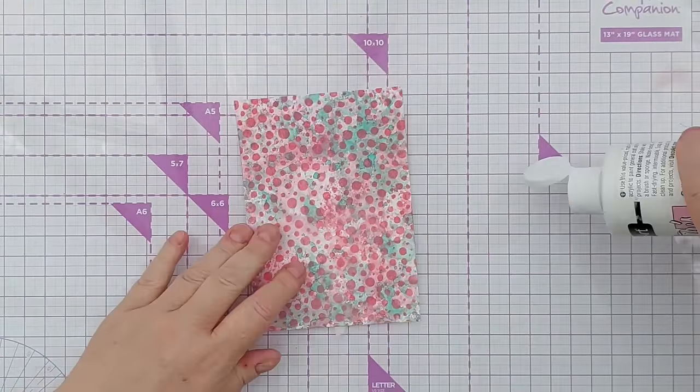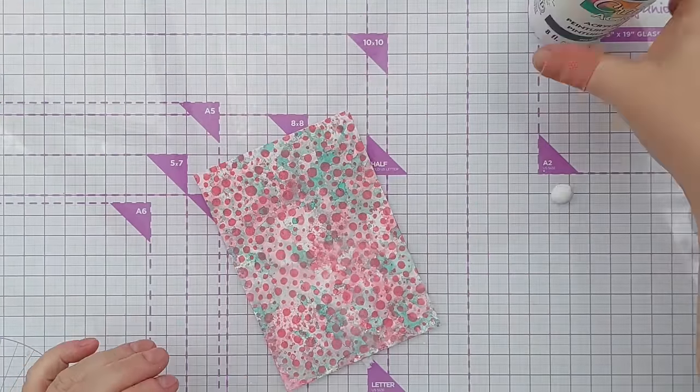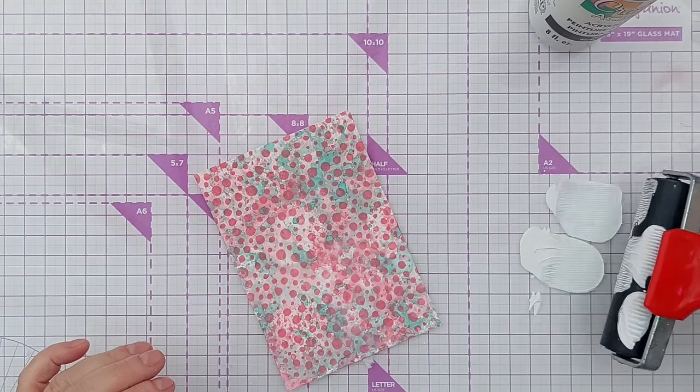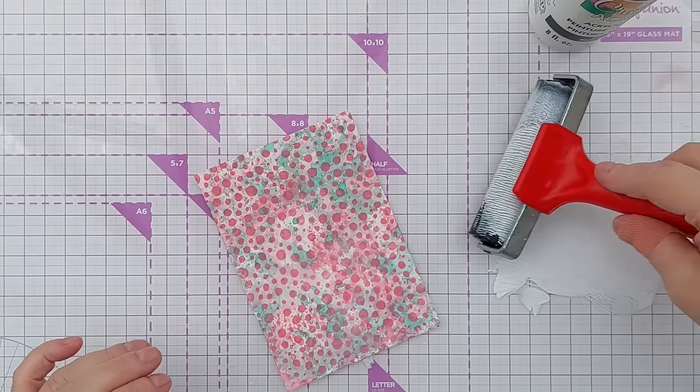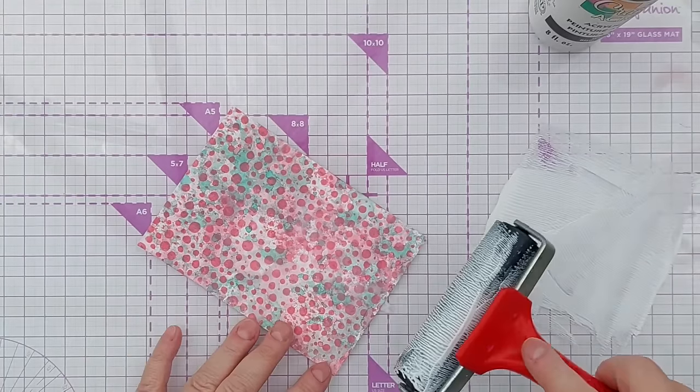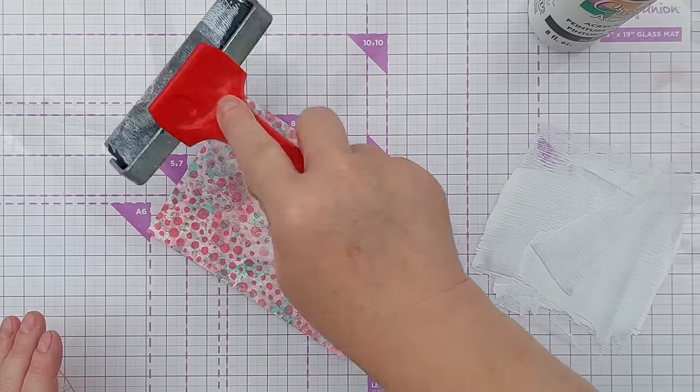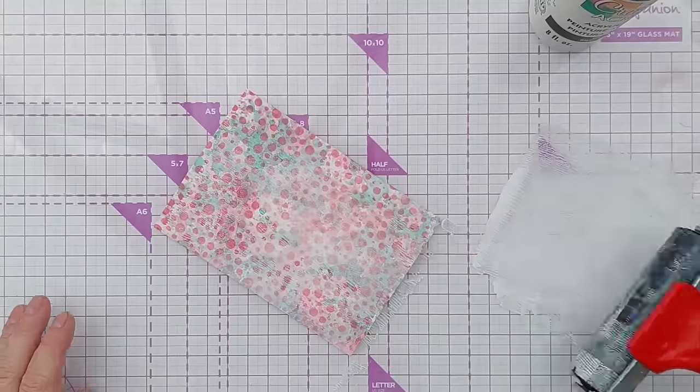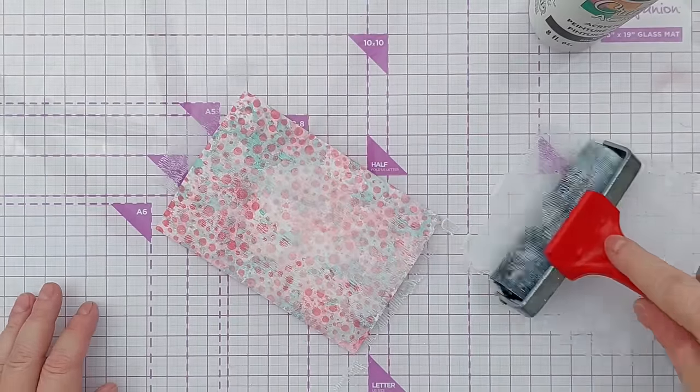I'm not entirely happy with this background. So I'm just going to take a little bit of white acrylic, add it to my brayer and roll it over. Push everything into the background.